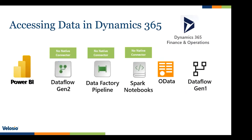Moving on to Finance and Operations — F&O as a successor to Dynamics AX is generally found in the upper portion of the mid-market and enterprise-type customers. You can use Dataflow Gen 2, Data Factory pipelines, and Spark Notebooks all within Fabric, but there are no native connectors, so you are effectively going through OData-type interfaces. The key considerations are: whether reporting needs to happen naturally within the application, what is acceptable from a latency standpoint, whether F&O data is all you're reporting on, or whether you're looking to use F&O data with other data — because those scenarios require different choices.